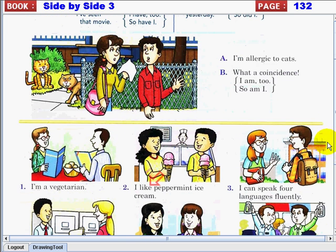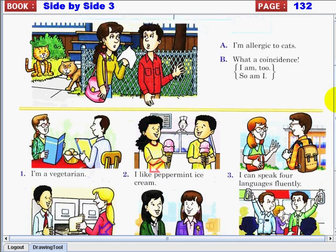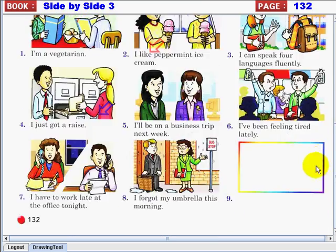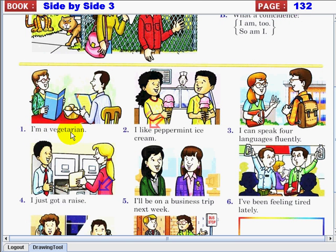All right, I'm allergic to cats. What a coincidence! I am too, or so am I. Now I need your response for each situation. I'm a vegetarian. You can say, oh what a coincidence, I am too, or so am I, it depends on you.